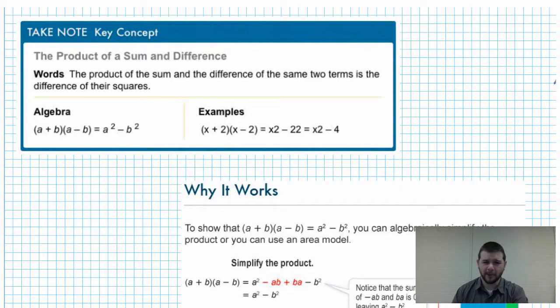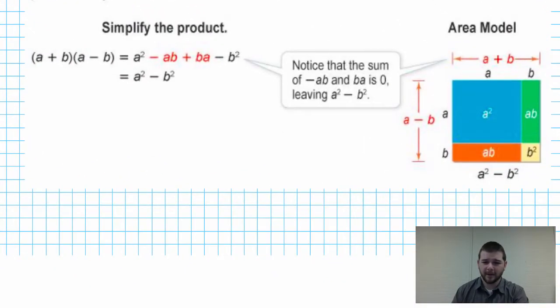A quick check at why it works with an area model. Well, a plus B and a minus B. Note the green and red to represent positive and negative respectively. When we multiply those, the key thing to notice is that there is a green rectangle with area AB and a red rectangle with area AB. Recall that green represents positive area or positive values, red represents negative.